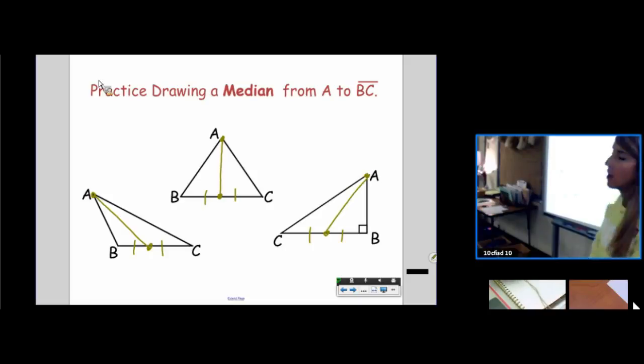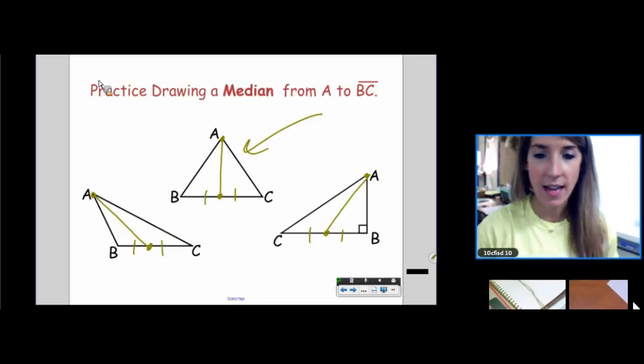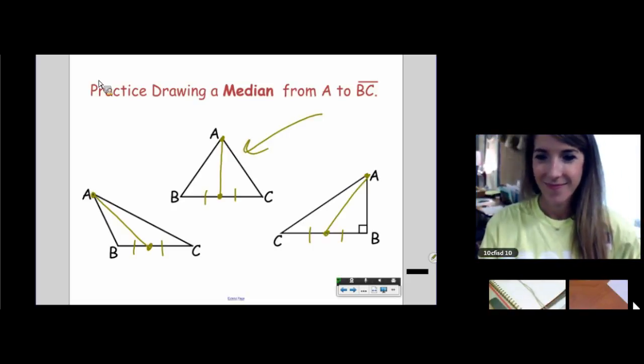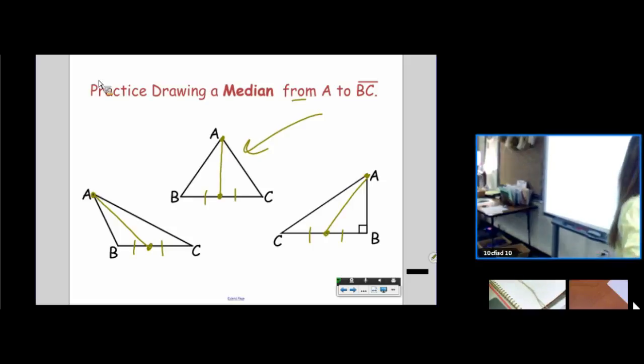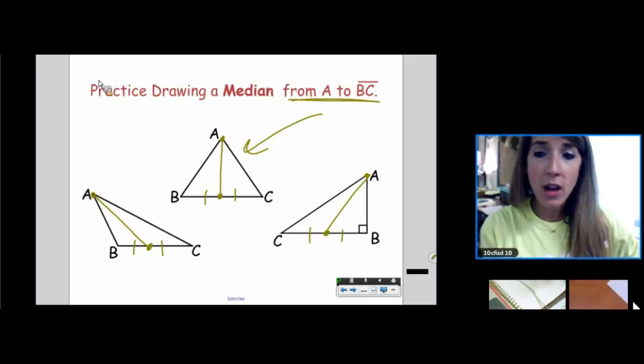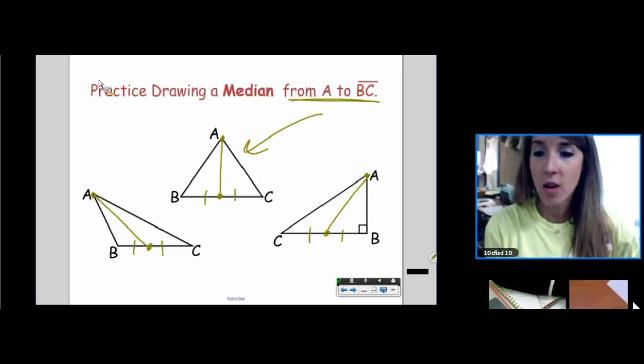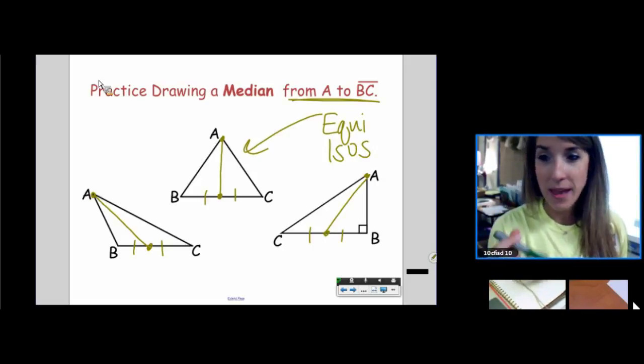But the only time a median is going to do double duty and also be an angle bisector is in this triangle right here. What kind of triangle do you think that is? There's no certain vertex. I just told you to draw it from there. Every triangle has three medians and three angle bisectors. There's not just one. I just didn't want the picture to get too busy. In an equilateral triangle and an isosceles triangle, the median will also be an angle bisector. No other triangle will that happen.